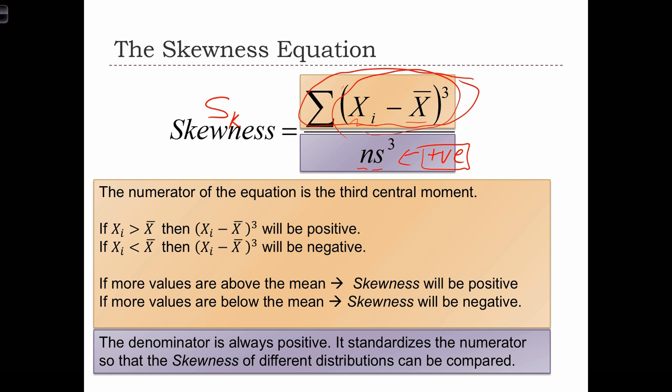If, on the other hand, we have more values above the mean, when we sum up these cubed deviations, the sum is more likely going to be a positive number, and therefore skewness would be positive.